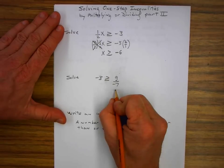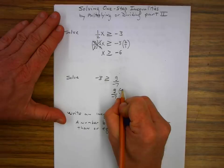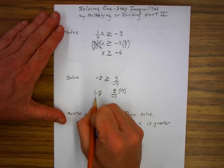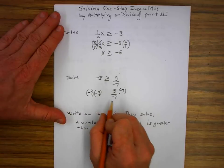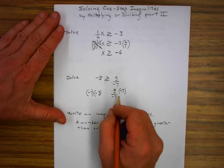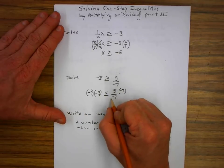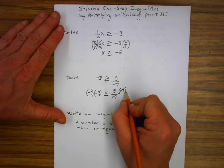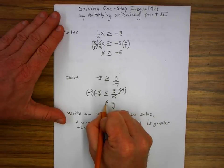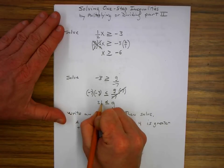So I write g over negative seven times negative seven and negative three times negative seven. Because I'm multiplying both sides by a negative number, I need to change the direction of the inequality. Negative seven over negative seven is just one, so I'm left with g on the right side, which is greater than or equal to — wait, flipped — negative seven times negative three is positive twenty-one.